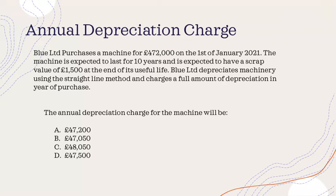Everyone got the question correct who voted, which is a good sign. The answer is B. The question gives us a machine worth £472,000, and by the end its residual value is £1,500 — which is pretty low. It uses the straight-line method.